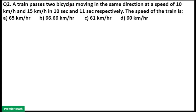A train passes two bicycles moving in the same direction at a speed of 10 km per hour and 15 km per hour in 10 seconds and 11 seconds respectively. The speed of the train is?